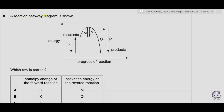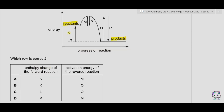Question number 8: a reaction pathway diagram is shown. We have reactants reacting together to form products, and products going back to the reactants. So therefore this is a reversible reaction. Which row is correct? Now we can see that one arrow is going down while the other arrow is going upwards — opposite arrows are involved.